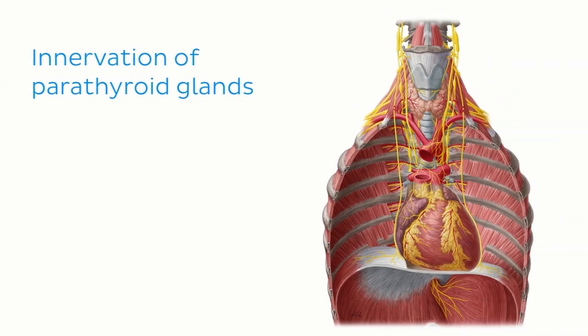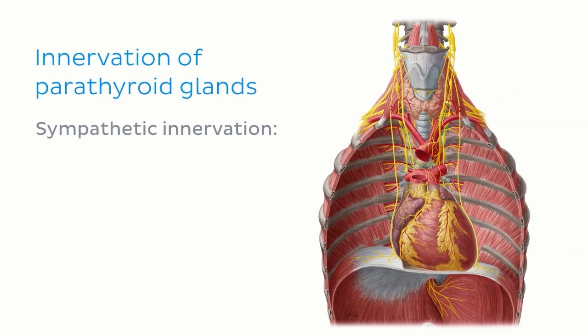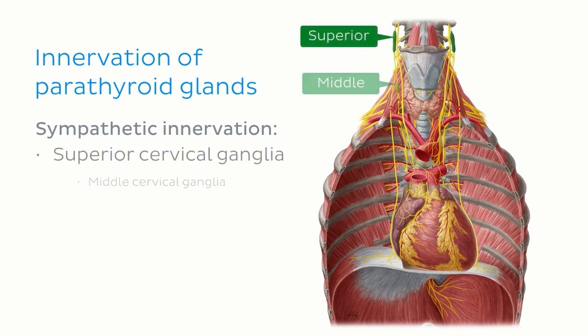Innervation to the parathyroid glands is nice and straightforward. It only receives sympathetic innervation, which comes from the superior and middle cervical ganglia.